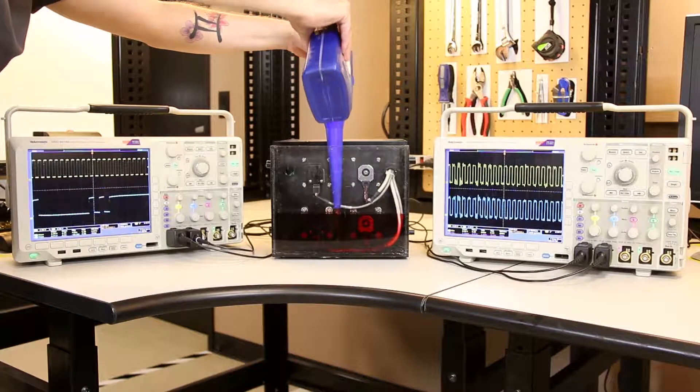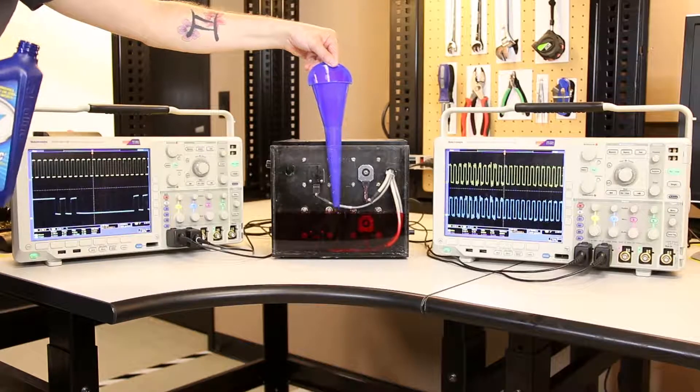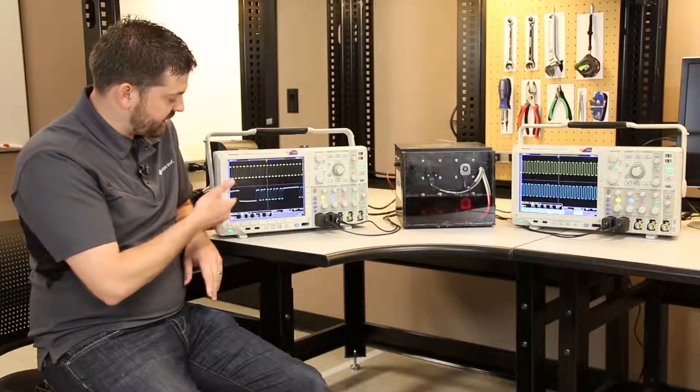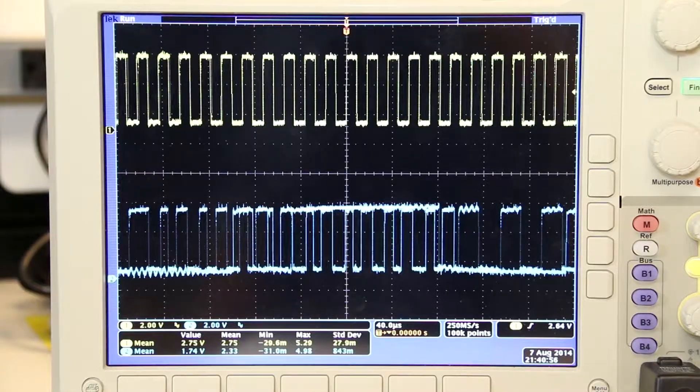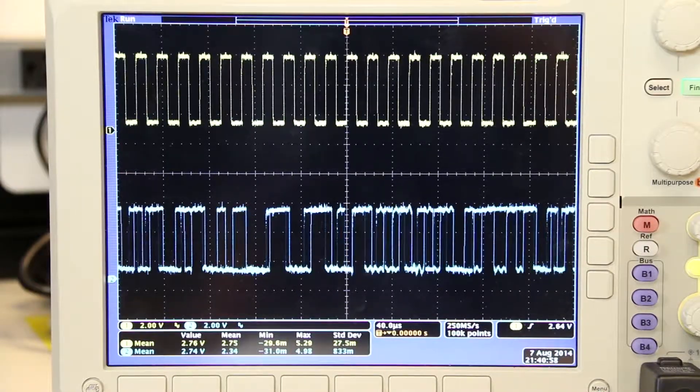As you can clearly see, once the transmission fluid has been added to the enclosure, the optical encoder output down here in oil has become erratic, missing pulses or long chunks of time where it's not even outputting anything at all.